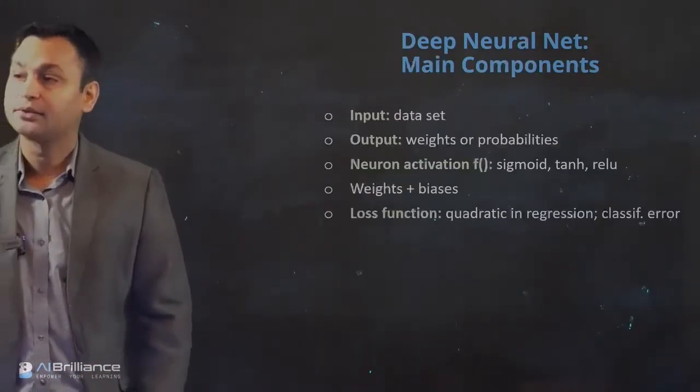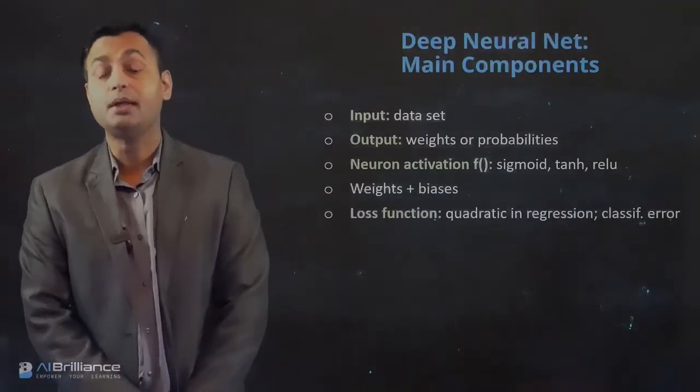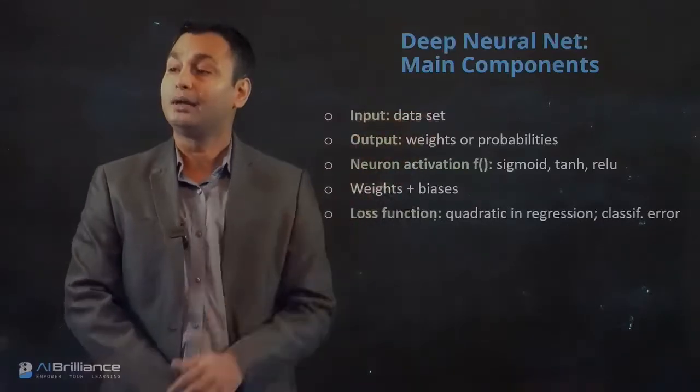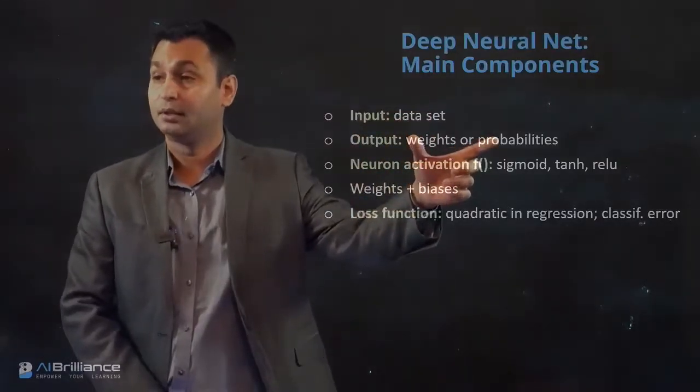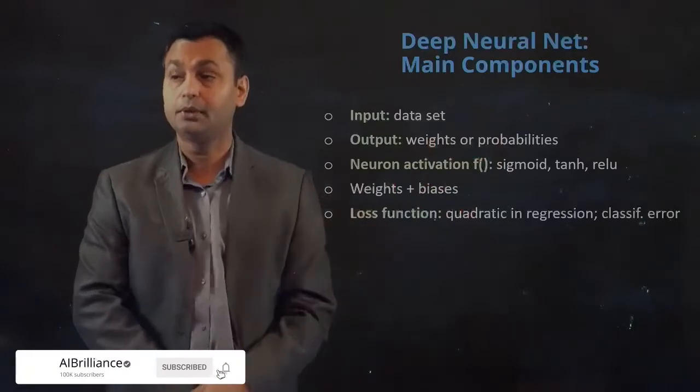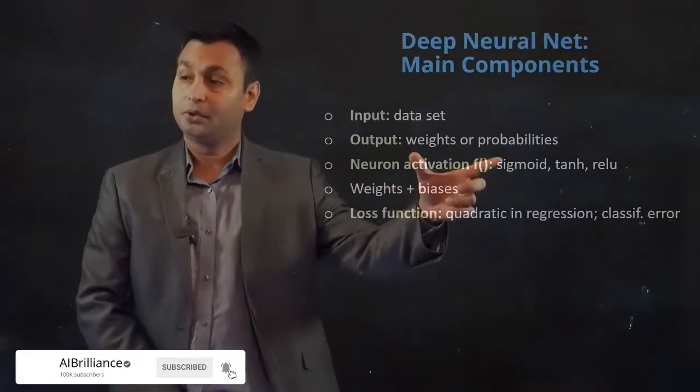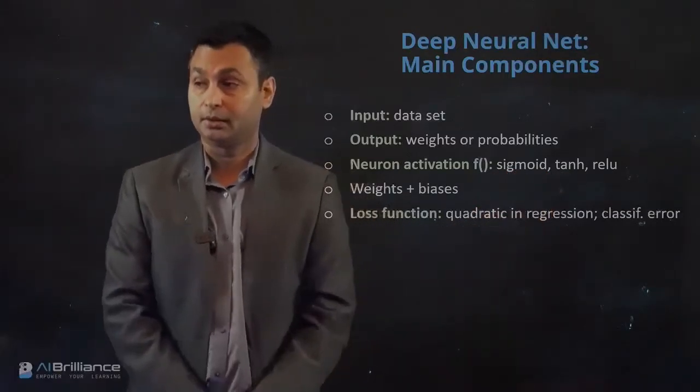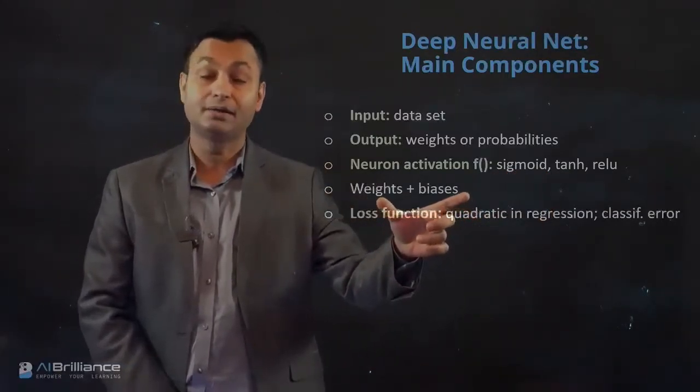So let's see what are the main components of a neural network. We have input which is the data set, we have output which might be weights or probabilities, we have neurons and activation functions that we talked about—sigmoid, tanh, and ReLU.